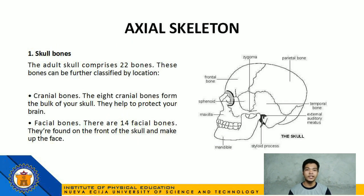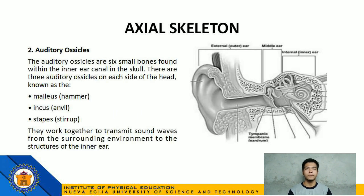Let's identify what the axial skeleton is composed of. Number 1: Skull. The adult skull comprises 22 bones, which can be further classified by location into cranial bones and facial bones. The 8 cranial bones form the bulk of our skull, and there are 14 facial bones found on the front of the skull. Number 2: Auditory ossicles — 6 small bones found within the inner ear canal in the skull, with 3 on each side of the head, known as the malleus or hammer, incus or anvil, and stapes or stirrup.